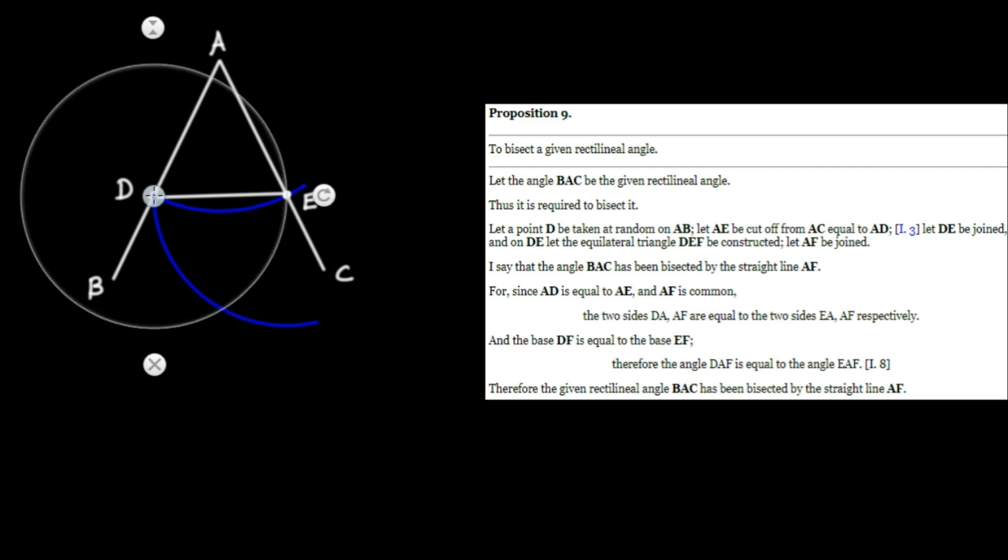Letting our radius be DE. I'll draw out some arc like that. And then I'll take note of their intersection, which appears to be right there. And we're going to call this point F. Let the equilateral triangle DEF be constructed. So we're just going to join D to F and F to E.